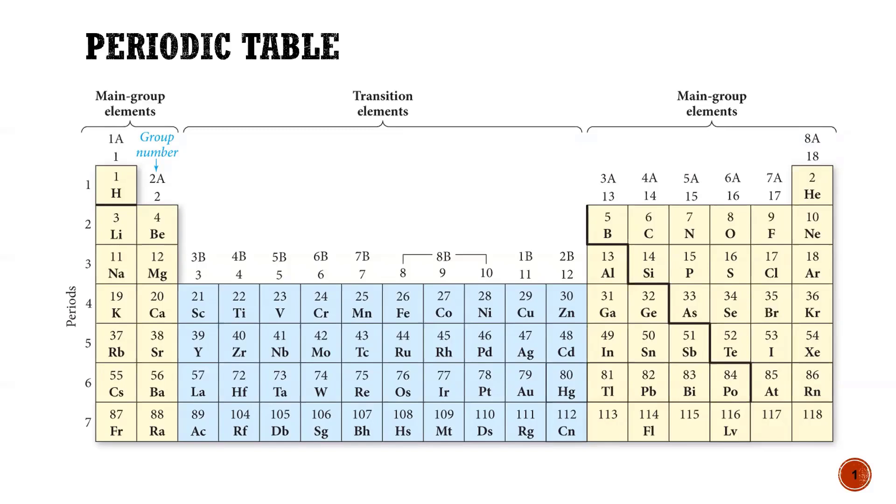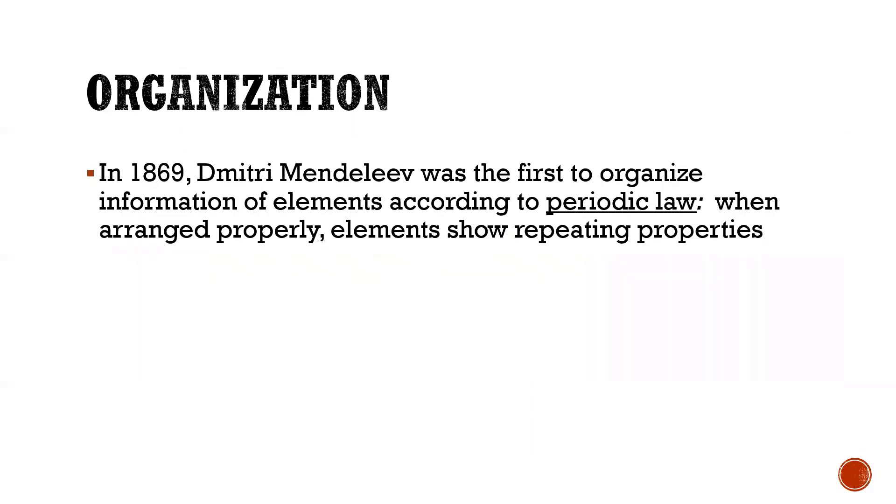So let's start with the basics. Mendeleev was the first to organize elements based on properties and it's referred to as a law because he was able to predict what future events would occur based on his observations.